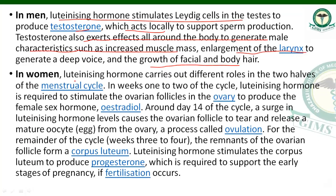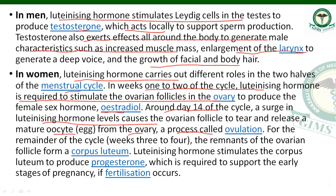In women, luteinizing hormone carries out different roles in two halves of the menstrual cycle. In weeks one and two of the cycle, luteinizing hormone is required to stimulate the ovary to produce a female sex hormone. Around day 14 of the cycle, a surge of luteinizing hormone causes ovarian follicles to tear and release a mature oocyte — a process called ovulation.